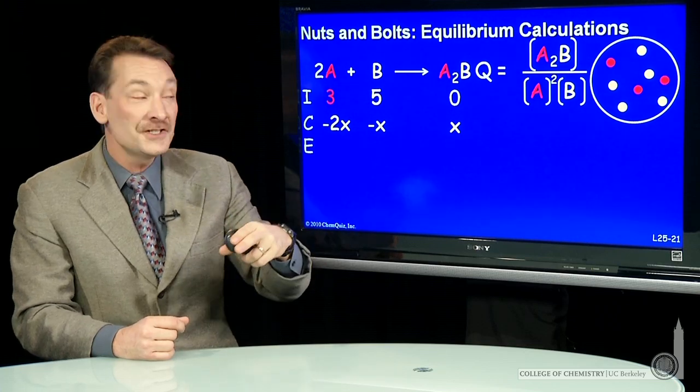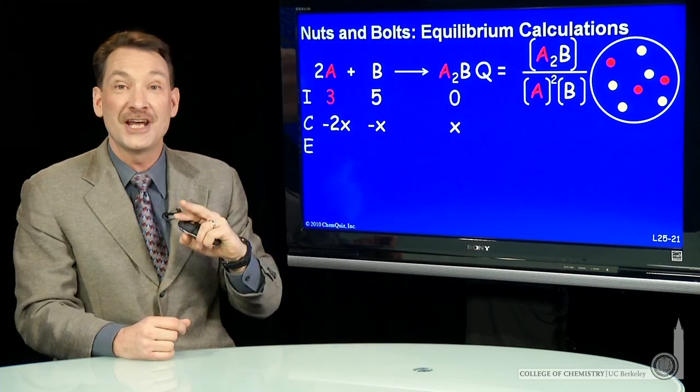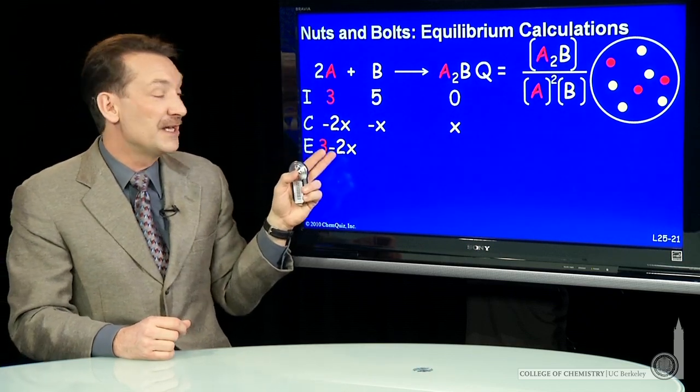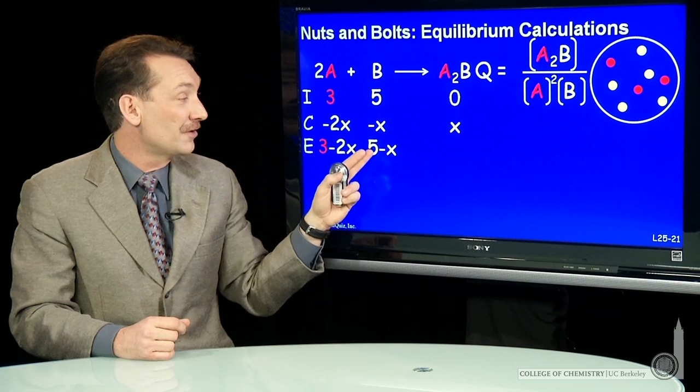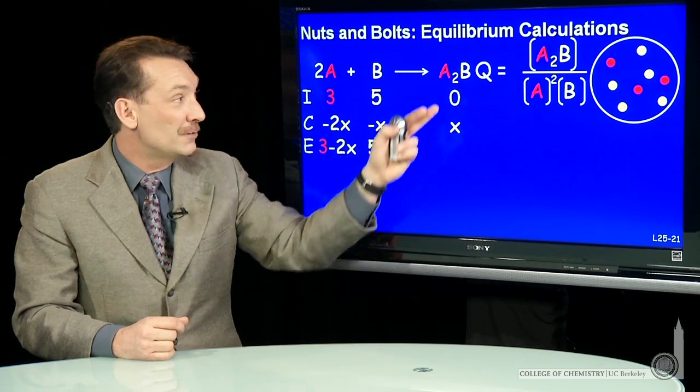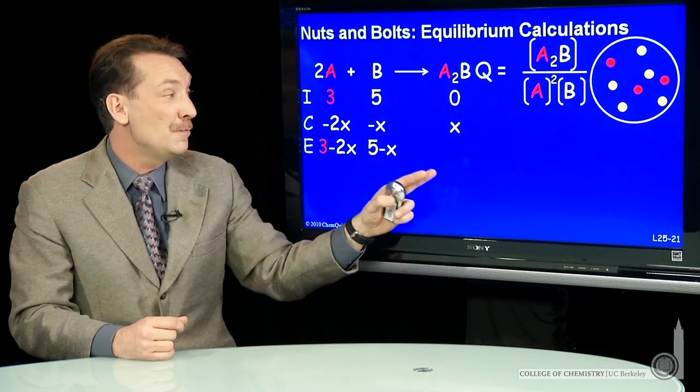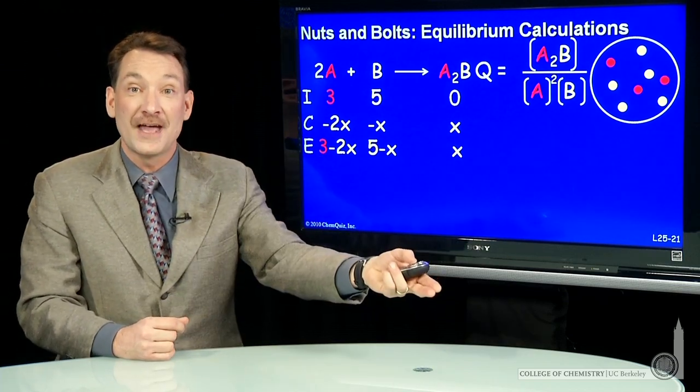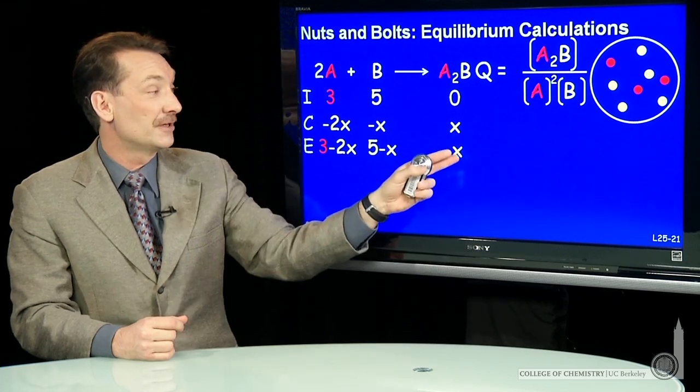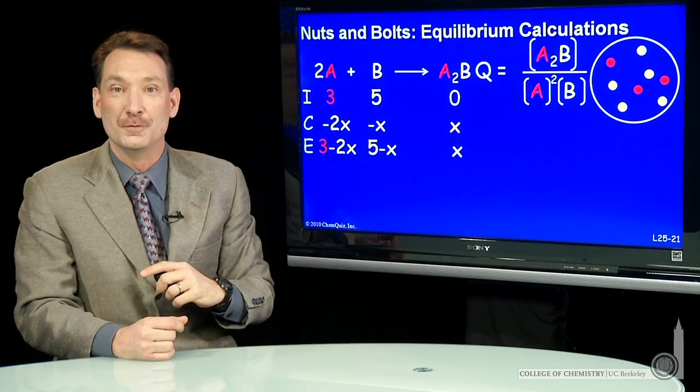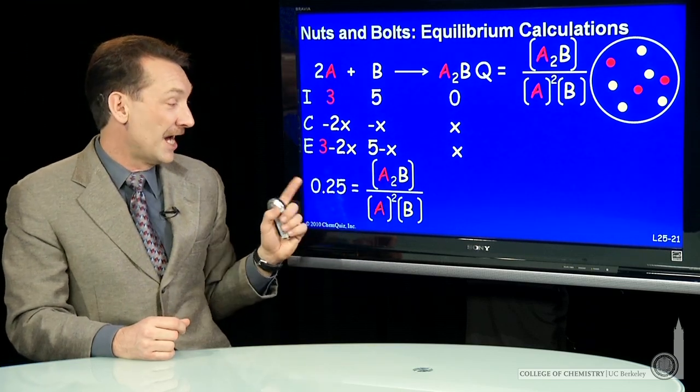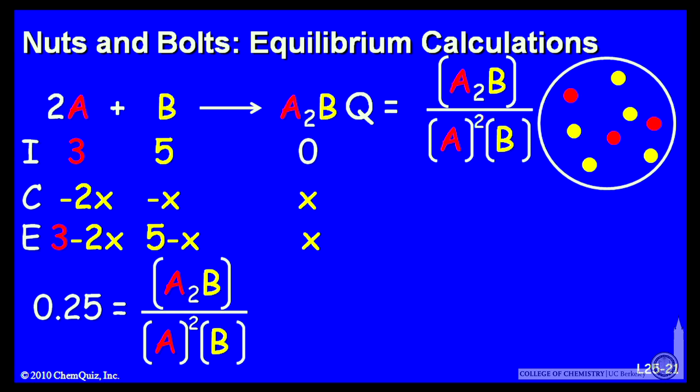So the change as I approach equilibrium looks like this. The equilibrium conditions will be the initial condition minus the change to reach equilibrium. So the equilibrium partial pressure of A will be 3 minus 2x, the equilibrium partial pressure of B will be 5 minus x, and the equilibrium partial pressure of A2B will be x. Now I can take those equilibrium partial pressures in terms of x. I can put those into my equilibrium expression. I know the equilibrium constant, and now I have three equilibrium values in terms of a single parameter x.